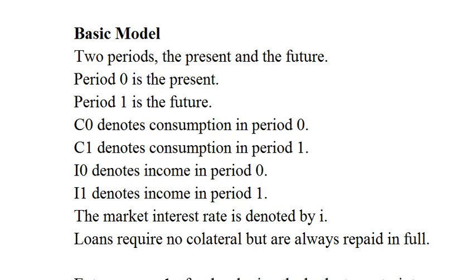The next example we want to look at is shifting income over time by borrowing or saving. In the basic model we have two periods. There is the present period and there is a future period.